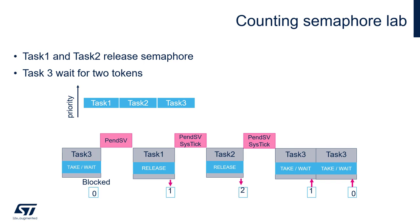Context is switched to task 1, which is releasing one token of the semaphore. Then task 2 during its time slot is releasing the second token. This causes unblocking of task 3 until the next iteration of its function, where it will wait again for two tokens of the counting semaphore.